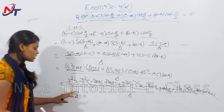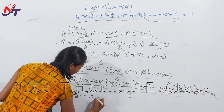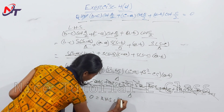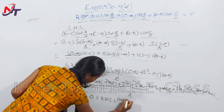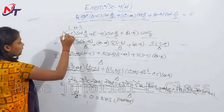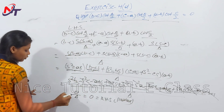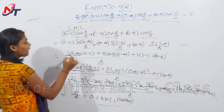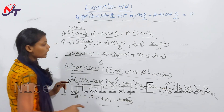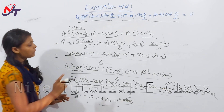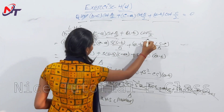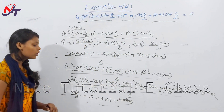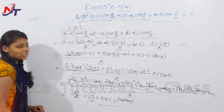Everything cancels to 0/Δ = 0, which is the right-hand side. LHS equals RHS, proved. LHS: (b-c)cot(A/2) + (c-a)cot(B/2) + (a-b)cot(C/2) = 0 — proved.